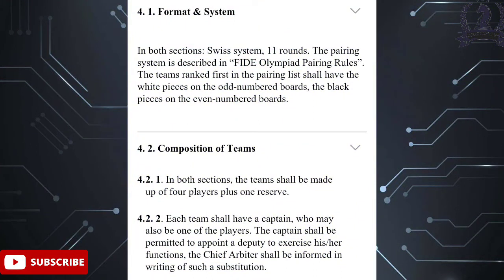The format of the game is classical, and in both sections, 11 rounds will be played based on the Swiss system. The team ranked first in the pairing list shall have the white pieces on the odd-numbered boards and the black pieces on the even-numbered boards.